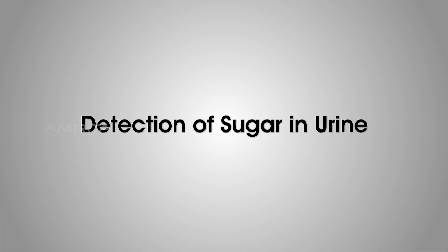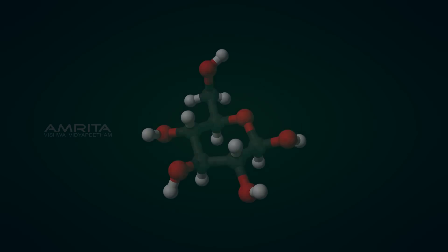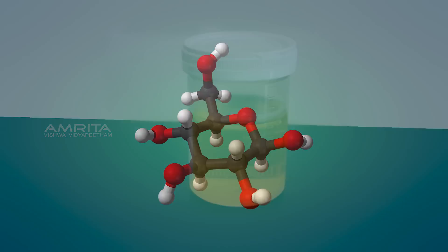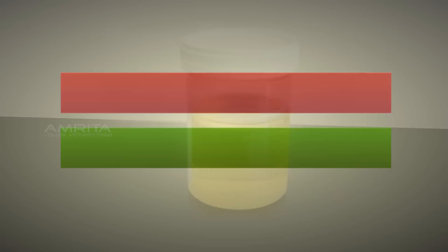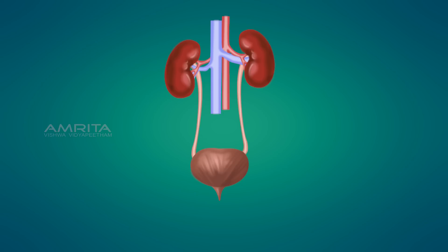Detection of Sugar in Urine. Sugar is ordinarily not present in normal urine. When the sugar level in blood rises above normal level, the kidney eliminates the extra sugar through the urine, and sugar then starts to appear in urine.